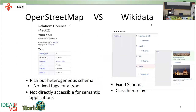Coming to the differences between OpenStreetMap and Wikidata at the schema level, the difference is really vast. On the OSM side, new tags and keys can be added at any given time, so the schema is not fixed — it is rich but heterogeneous and not directly accessible by semantic applications and technologies such as SPARQL. On the Wikidata side, we have a fixed schema. For example, the 'instance of' property tells the class of an entity, similar to OSM's primary tag, and because this property is well-defined, we also have a class hierarchy.